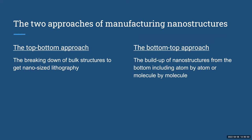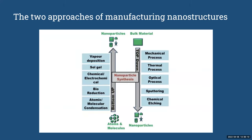There are two approaches to manufacturing nanostructures: the top-down approach, which is the breaking down of bulk structures to get nano-sized lithography, and the bottom-up approach, which is the buildup of nanostructures from the bottom, including atom by atom or molecule by molecule.